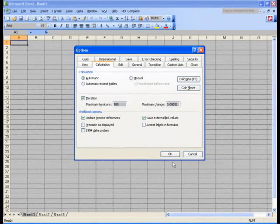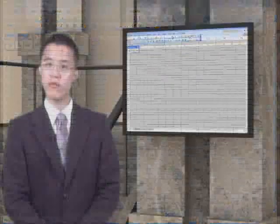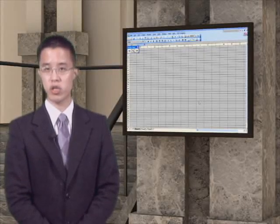Once you have done this, you may hit OK, and now you have turned on Iterations. Once you have turned on Iterations, you will see that your status bar will now say Calculate instead of Circular.